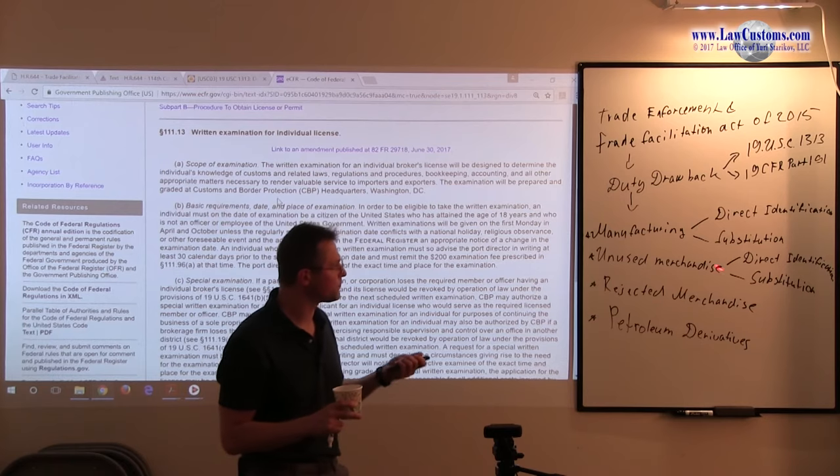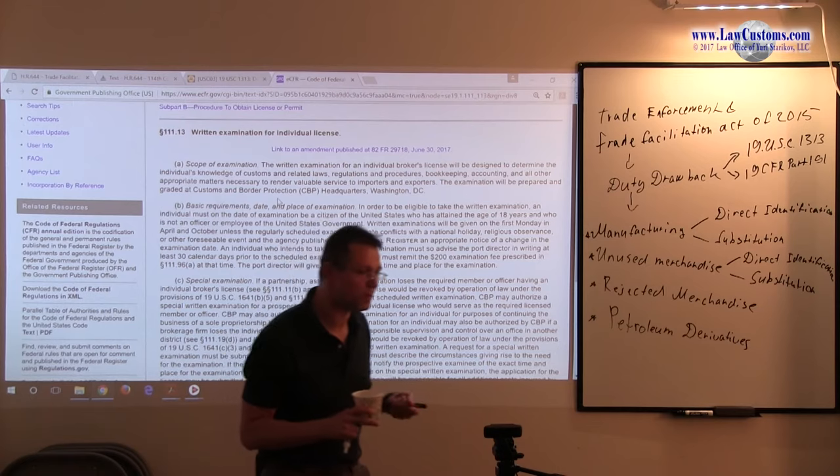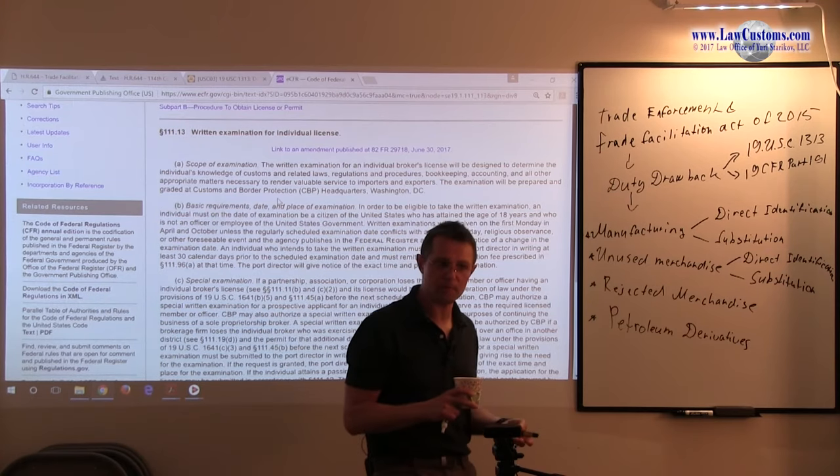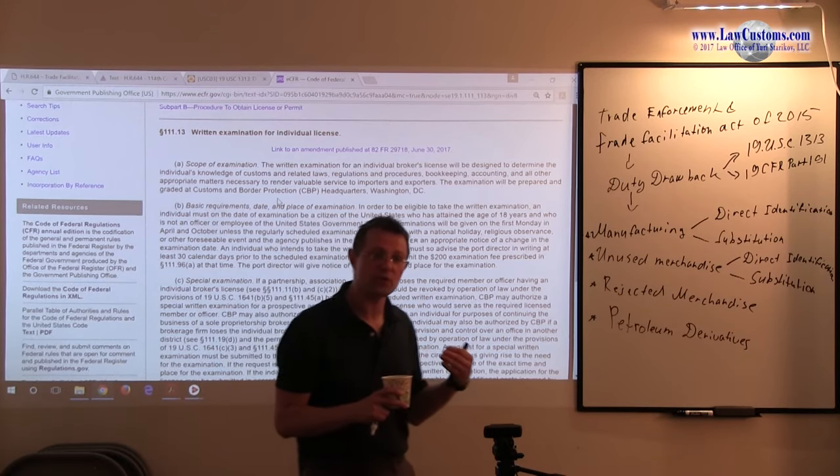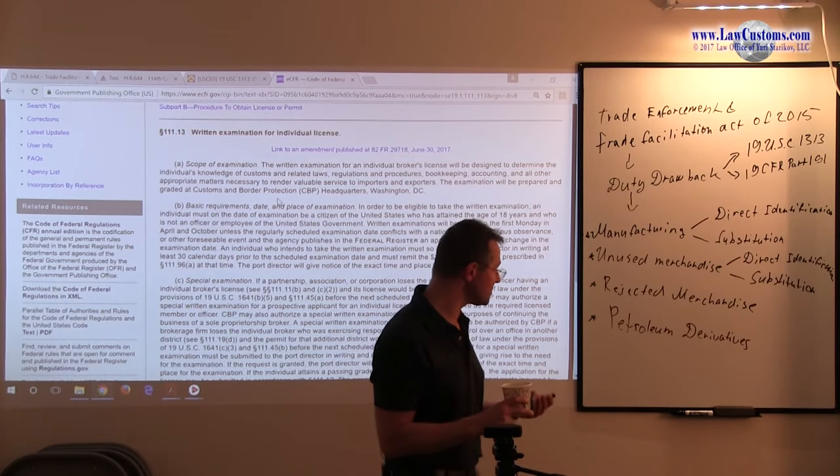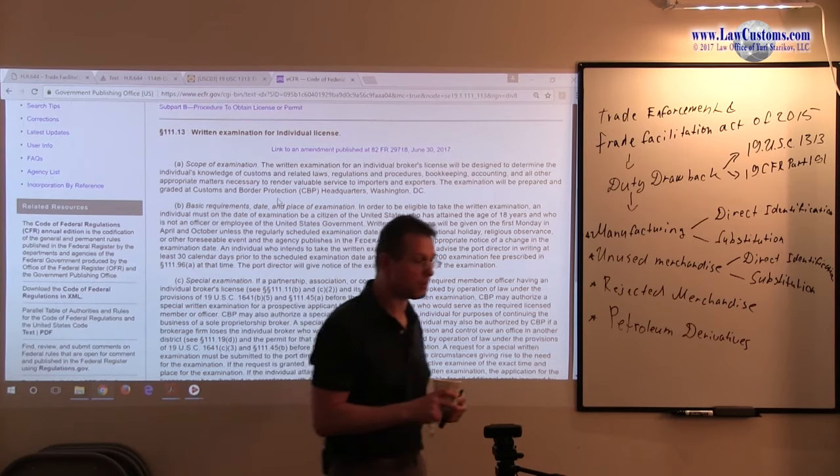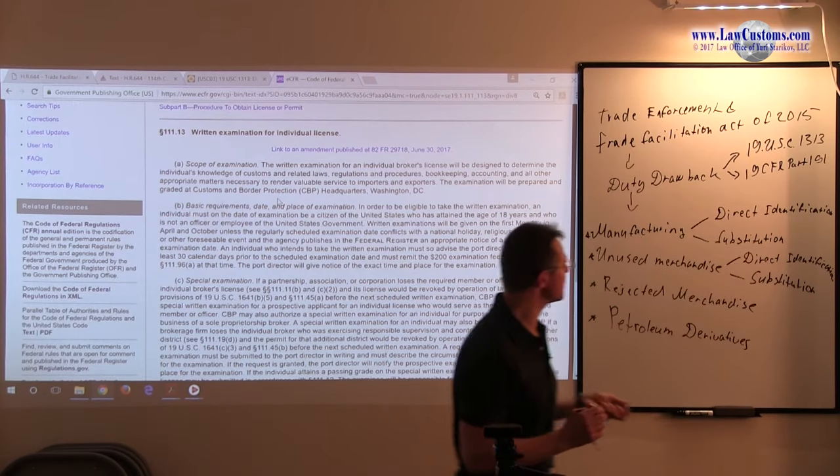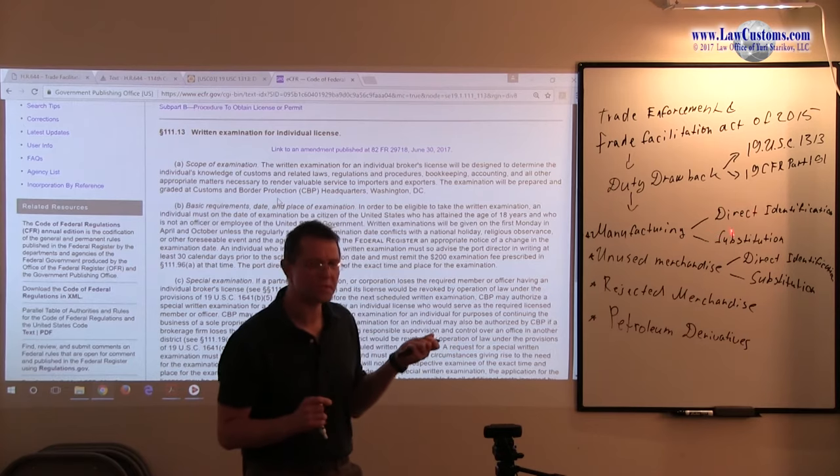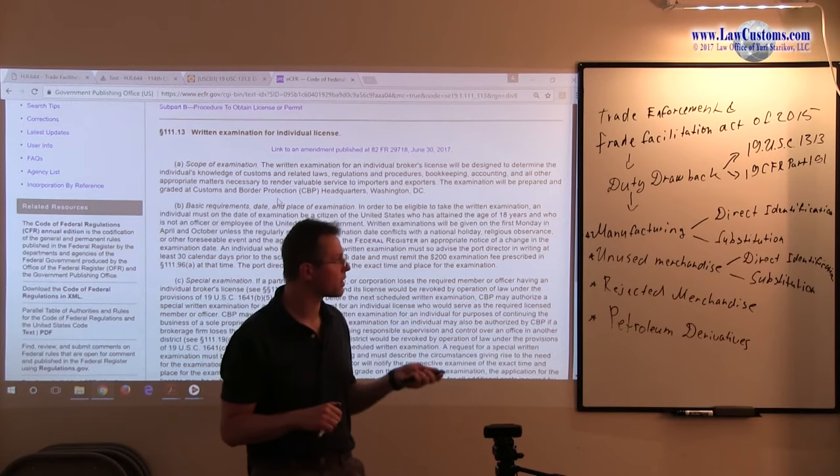So, the idea here is for those parts, for those parts that you used in the manufacturing process, that you can directly identify. So, here in our hypothetical, it would be the frame and the wheels, you get to have 99% of duties and fees and taxes. Well, in the case of bicycles, I do not believe there is any federal taxes, like excise taxes. But nevertheless, you would be able to get the benefit of direct identification manufacturing drawback.